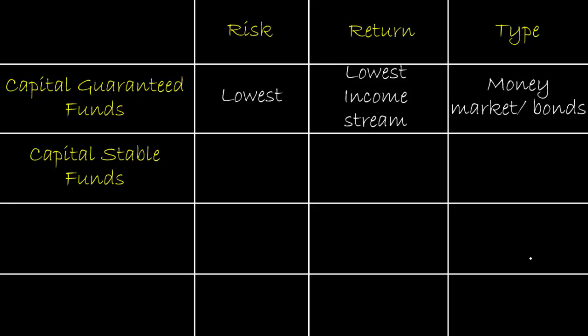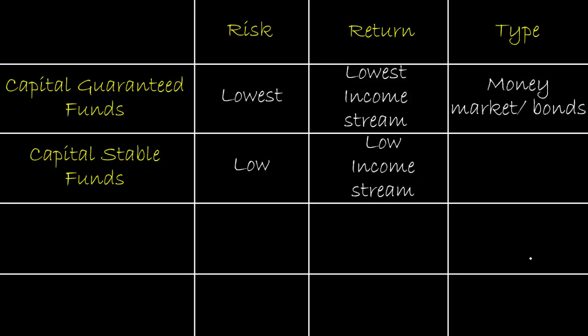The second type is called capital stable funds. Capital stable funds target a low level of risk, but it is slightly higher compared to capital guaranteed funds. The return is low, but still higher than capital guaranteed funds. The emphasis remains on the income stream, meaning investors must receive periodic income, so they still invest in the money market or bond market.